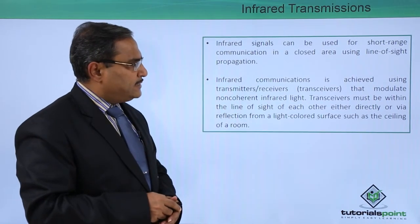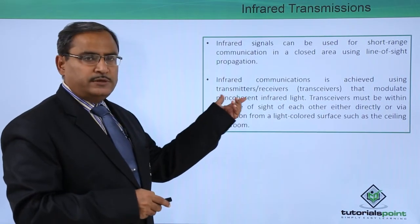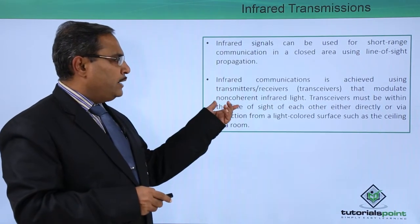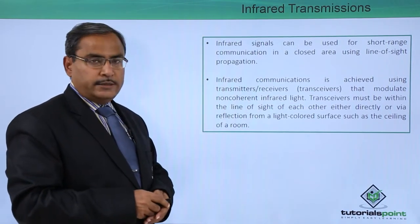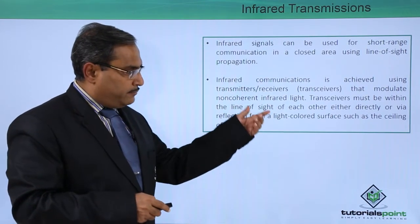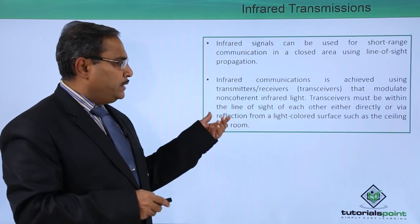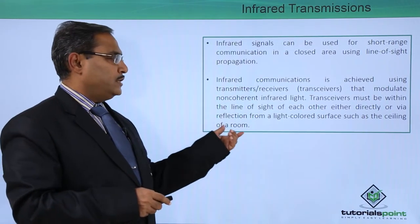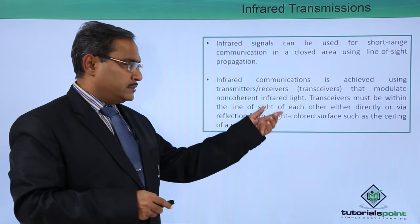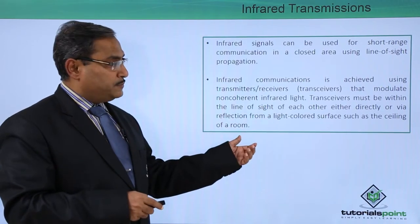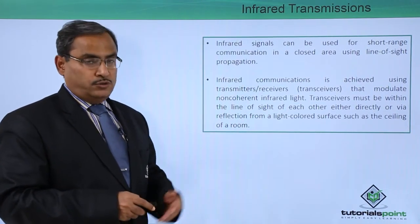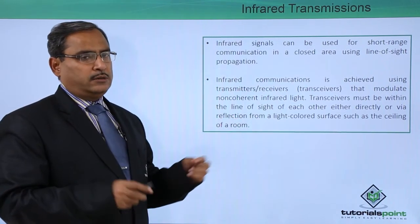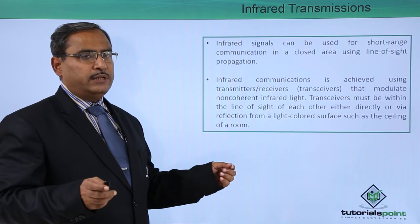Infrared communication is achieved using transmitters and receivers — as a whole we can call them transceivers — that modulate non-coherent infrared light. Transceivers must be within the line of sight of each other either directly or via reflection from a light-coloured surface, such as the ceiling of a room, from where the reflection can establish communication between transceivers.